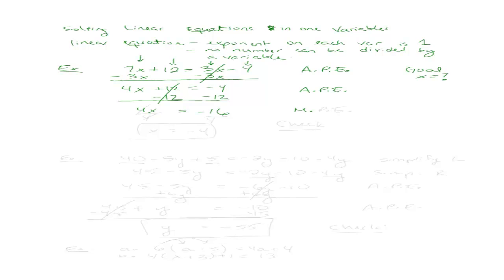Finally, I'm done with the addition property of equality. Now let me use the multiplication property of equality to isolate x. And if I have 4 times x and I want to isolate x, I can divide both sides by 4. And I'm left with an x equals negative 4. You should check that. And I'll leave the check up to you.